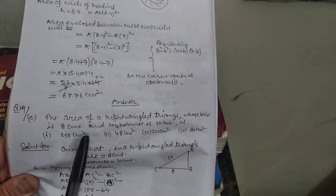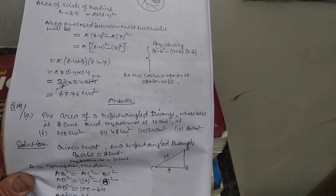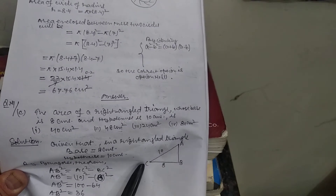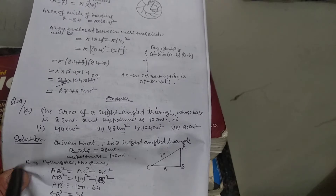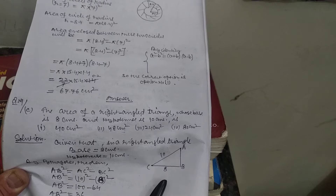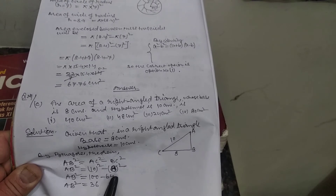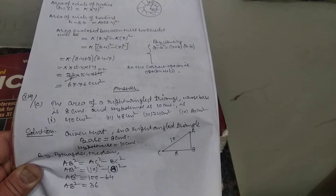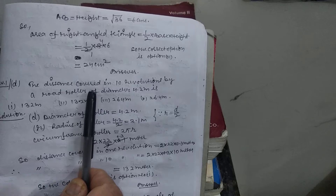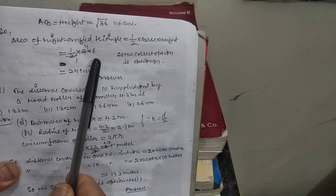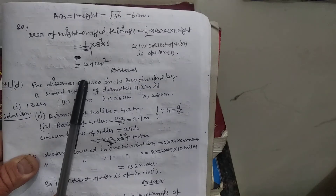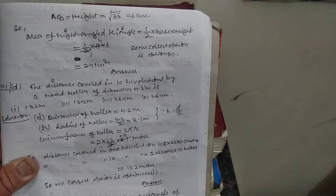Question 1C: Find the area of a right angle triangle whose base is 8 cm and hypotenuse is 10 cm. In right triangle ABC with 90 degrees at B, using Pythagoras theorem: AB² equals AC² − BC², giving AB² equals 36, so AB equals 6 cm. Area of right angle triangle equals half × base × height equals half × 8 × 6 equals 24 cm². The correct option is option number 3.